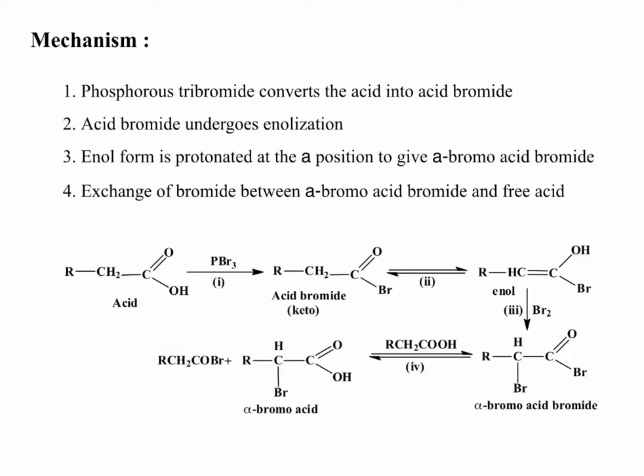In the second step, this acid bromide converts to enol form. This enol form is brominated at the α position to give α-bromo acid bromide. The last step is exchange of bromide between α-bromo acid bromide and free acid to form α-bromo acid as the product.